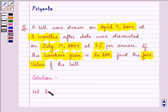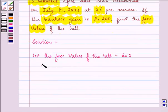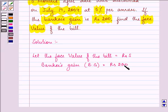Let the face value of the bill be equal to rupees S. Further, we are given bankers gain that is BG equal to rupees 200. Further, we are given rate of interest as 5% per annum.